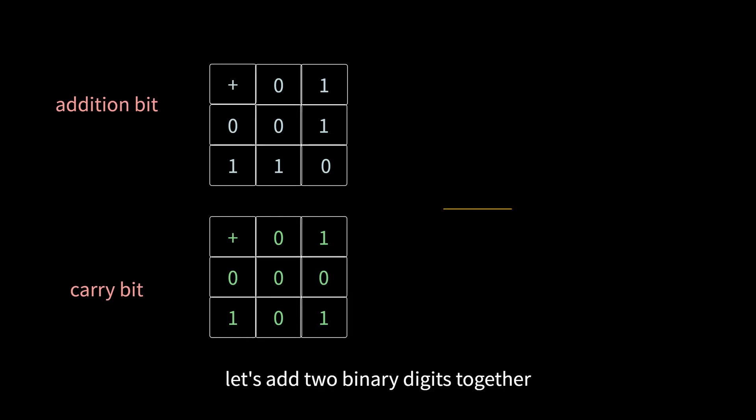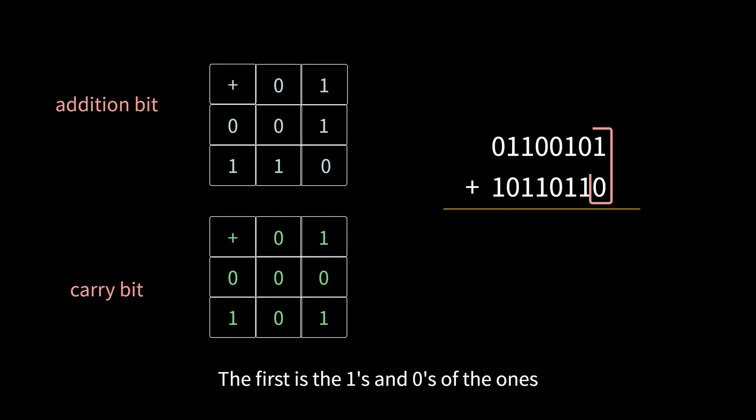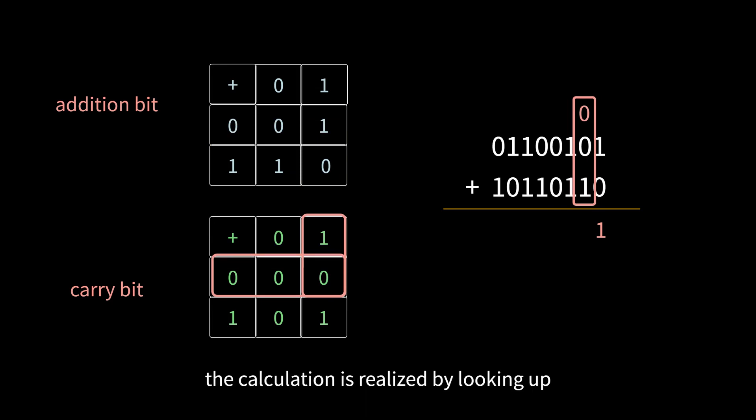With the help of these two tables, let's add two binary digits together. The first is ones and zeros of the ones place, and by using the table of addition bits, the result 1 is obtained. Then, use the carry table to get the zero carry. Then calculate the left digit. By analogy, the calculation is realized by looking up the table.